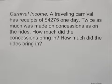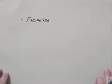We will solve this using the five-step problem-solving process. The first thing we note is that we have two quantities we're looking for: the amount on the concessions and the amount brought in by the rides. So we'll use two variables.